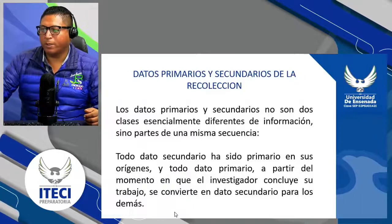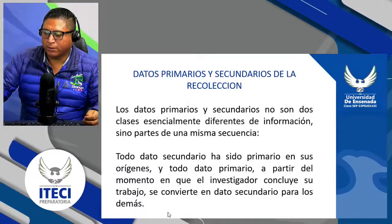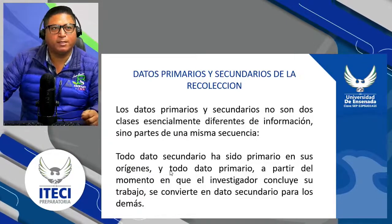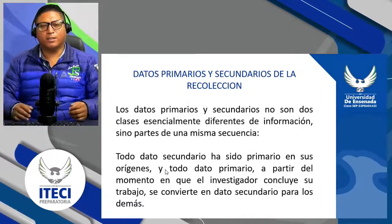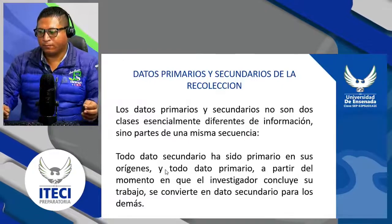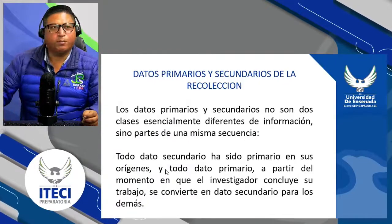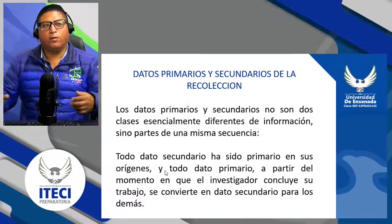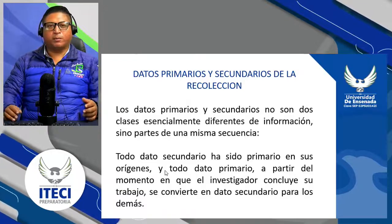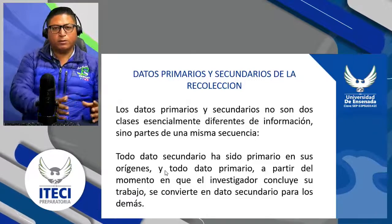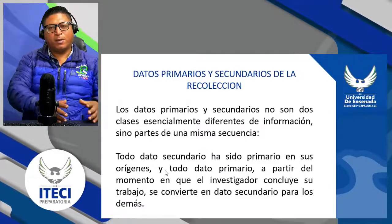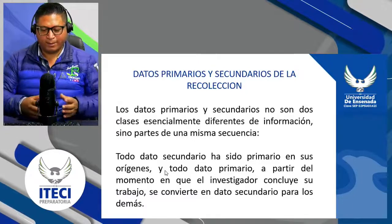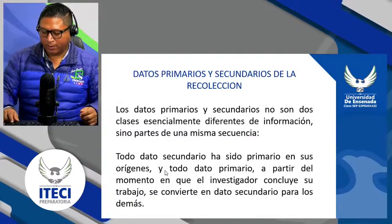Tenemos los datos primarios y secundarios de la recolección. Los datos primarios y secundarios no son dos clases esencialmente diferentes de información, sino parte de una misma secuencia — es decir, van unidos. Todo dato secundario ha sido primario en sus orígenes, y todo dato primario, a partir del momento en que el investigador lo incluye en su trabajo, se convierte en un dato secundario para los demás. Toda la información que recolectemos más nuestras ideas se va a convertir en dato primario y secundario, porque nosotros aportamos el conocimiento obtenido de la anterior información.